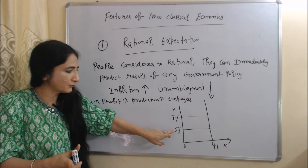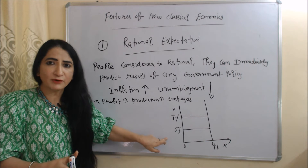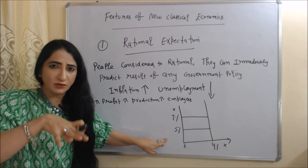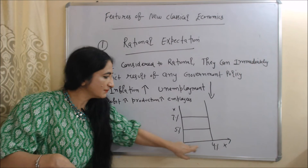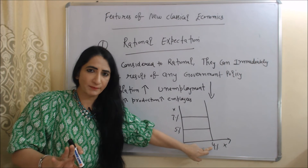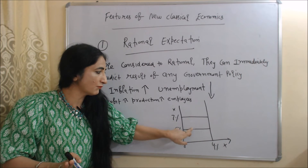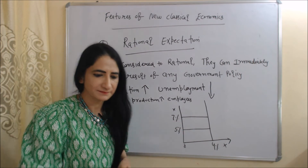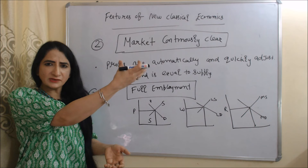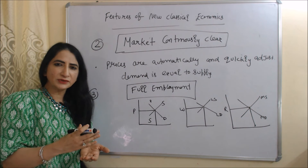In this diagram, you can see the government deliberately increases inflation from five to seven percent so that the unemployment rate can fall. But the unemployment rate remains the same at four percent, even though inflation has increased from five to seven percent.